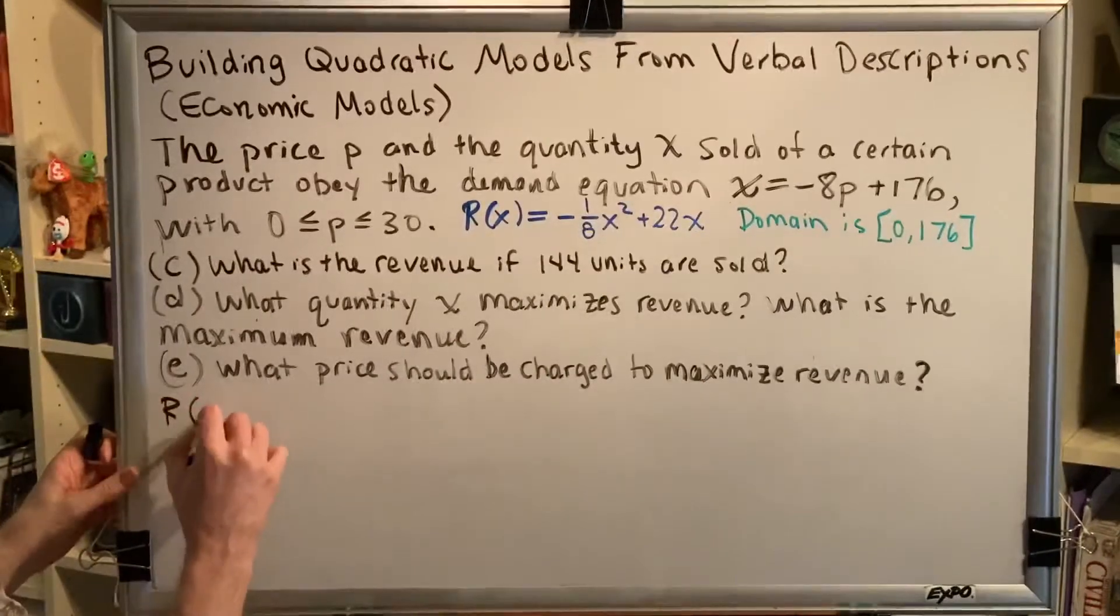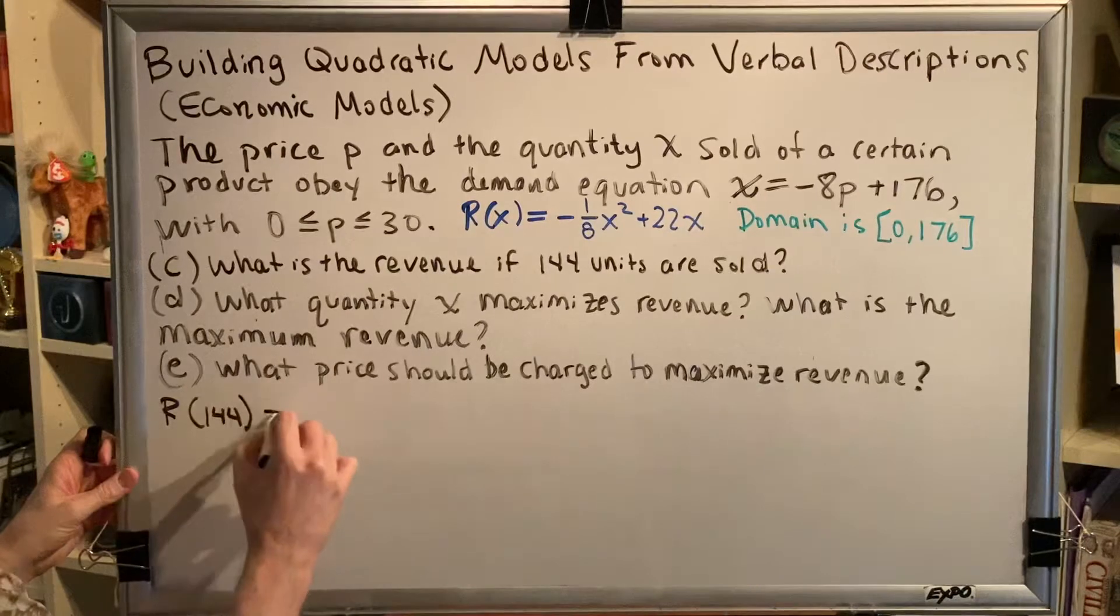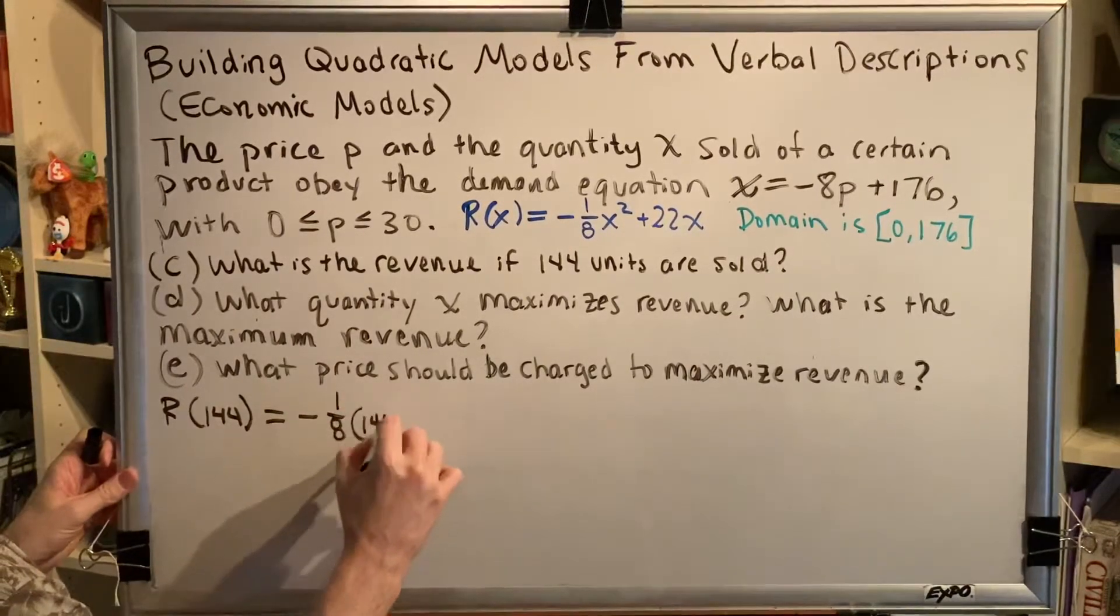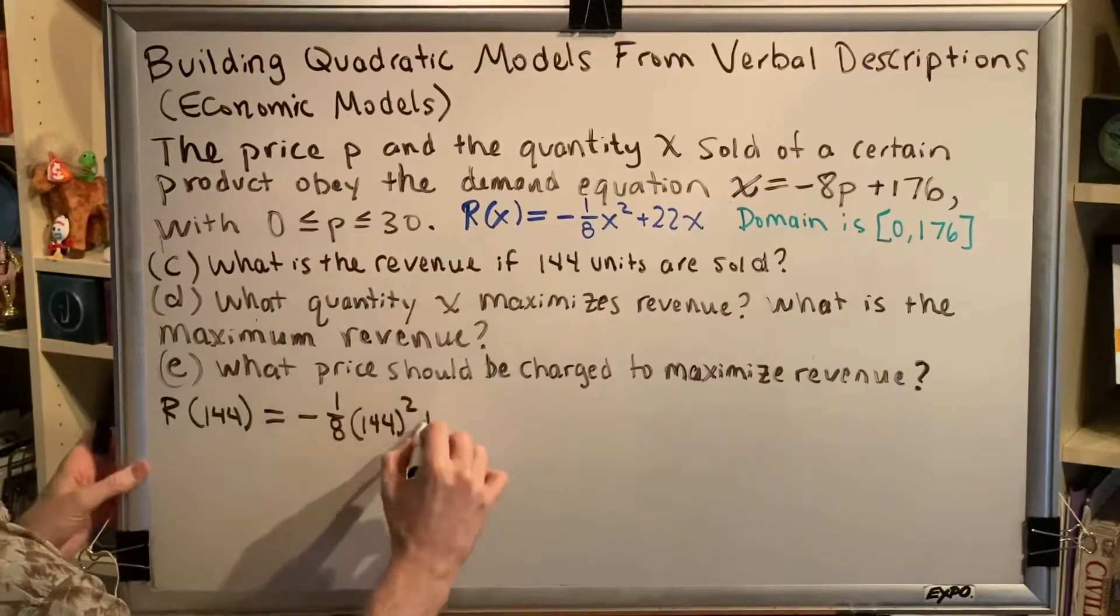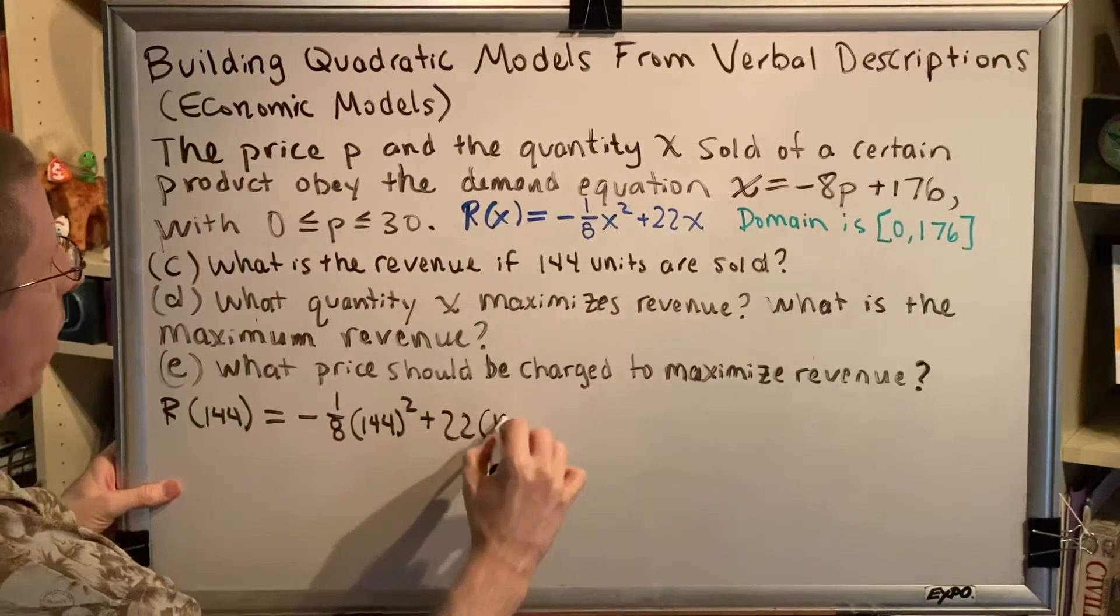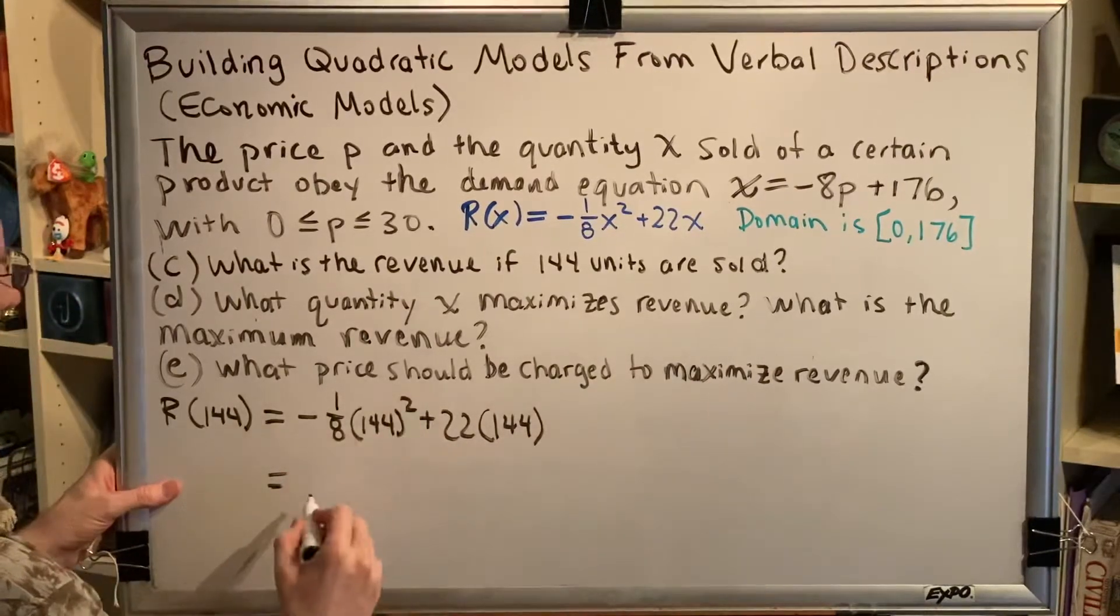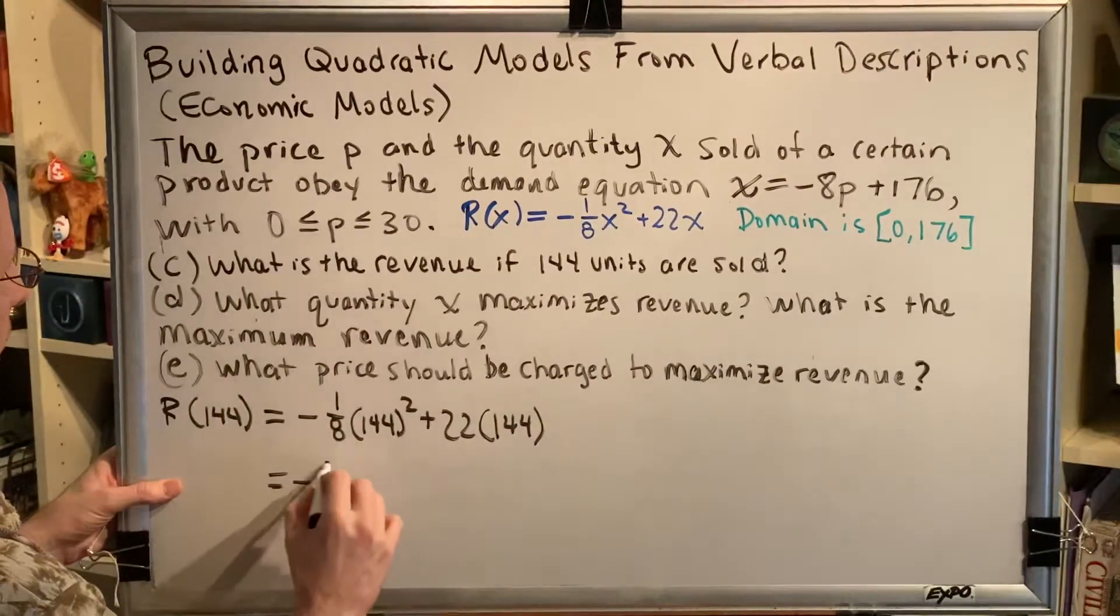R of 144 is equal to negative 1/8 times 144 squared plus 22 times 144, which equals. All right, order of operations says I should do 144 squared first.